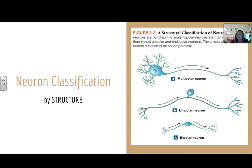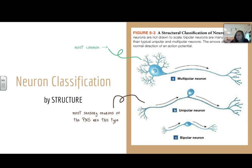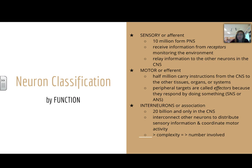We classify neurons in two ways. One is by structure: we have multipolar, unipolar, and bipolar neurons. The multipolar are the most common. The unipolar is most sensory neurons of the peripheral nervous system. And our bipolar are the least common — they're only in special sense organs. The other way we classify neurons is by function. Sensory neurons, also known as afferent neurons, number about 10 million and form the peripheral nervous system. They receive information from receptors monitoring the environment and relay information to other neurons in the central nervous system.